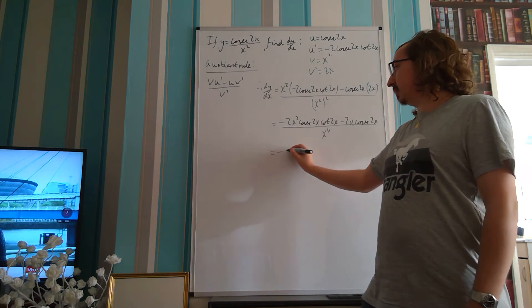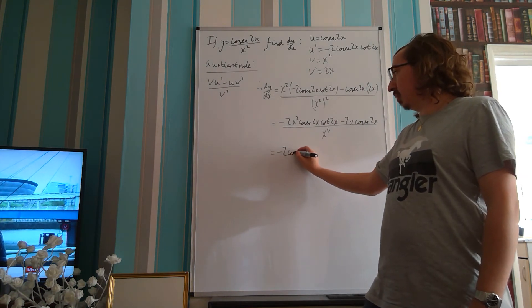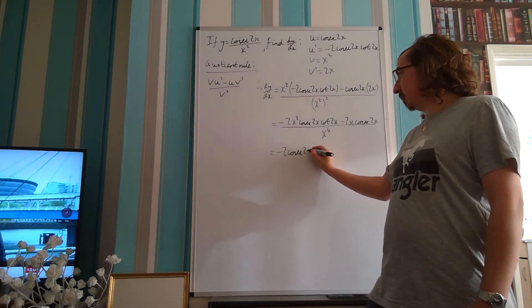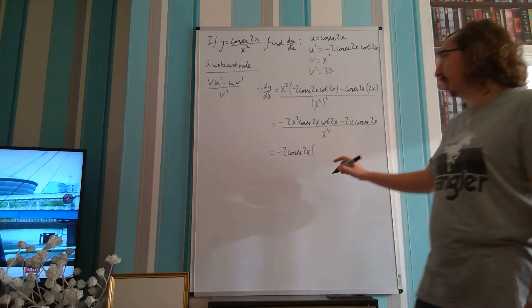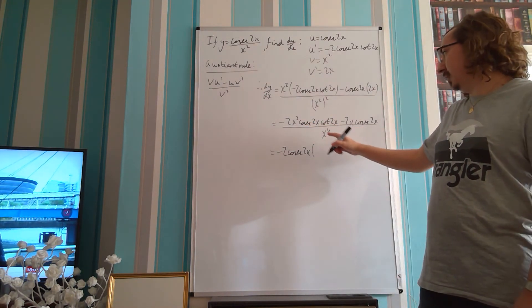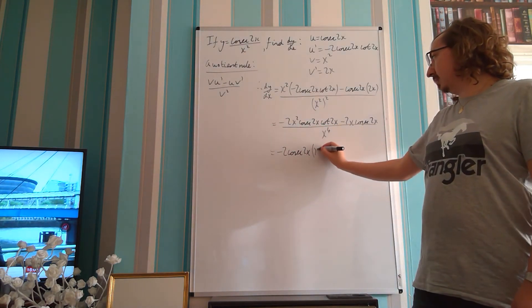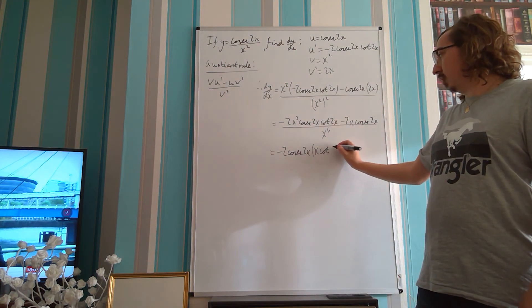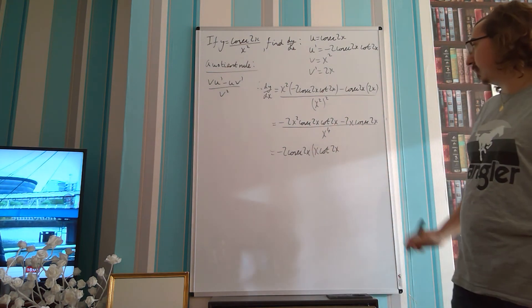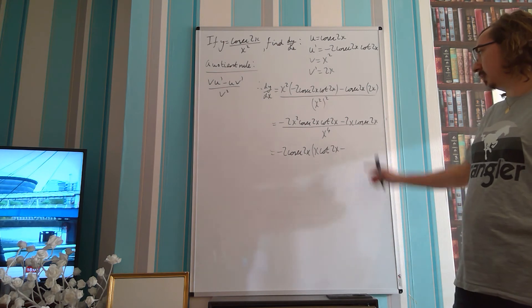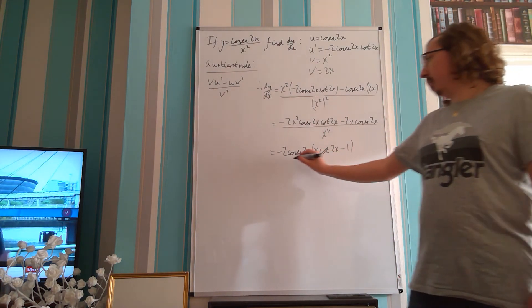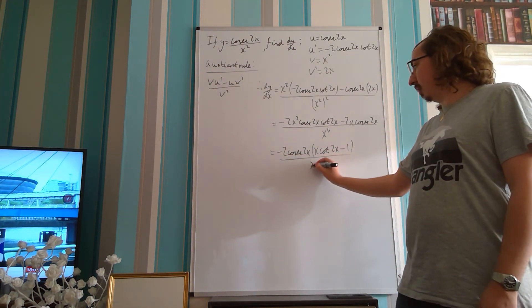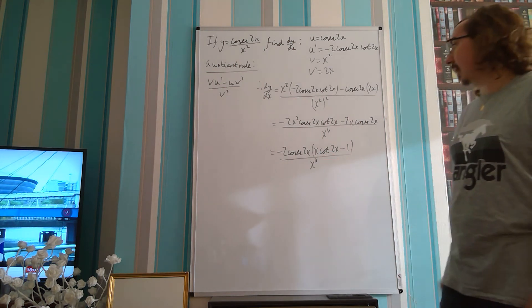And if we do that, we're left with minus 2 cosec 2x, which we've just taken out as a factor, which leaves us with an x cot 2x minus 1, all over x cubed.